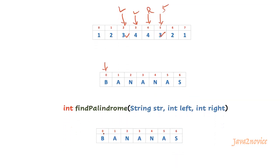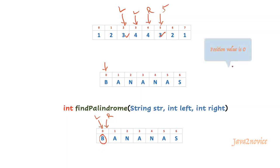Inside this function, initially both pointers left and right will be pointing to index 0. Since both are at the same position, the characters will match. We then have to move to the next iteration. Since the left pointer cannot move further because we are at the edge, we stop processing. So b itself acts as a palindrome of length 1, and we simply return its length 1. We will store the position and length for further processing: position equal to index 0, found length equal to 1.